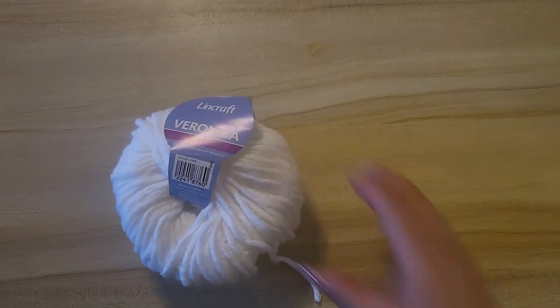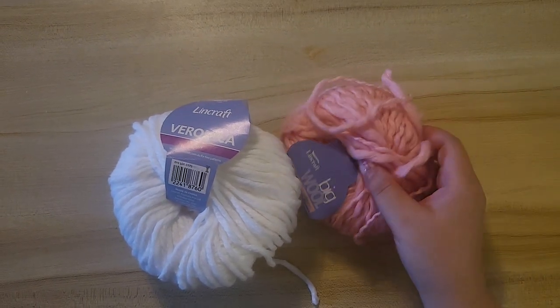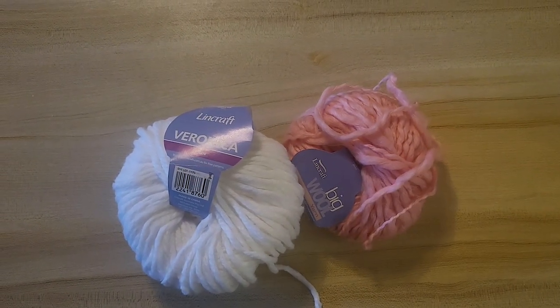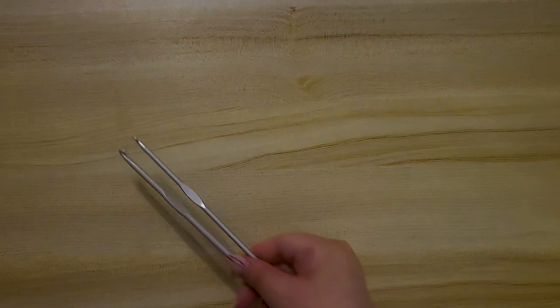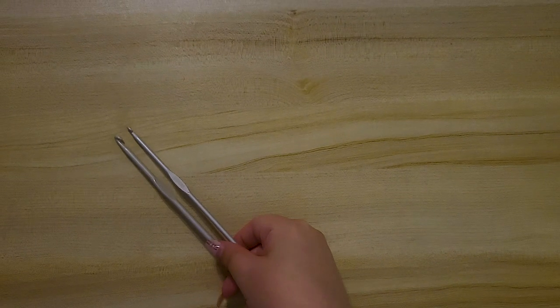First you will need two different color yarns. I chose white and pink for mine. You will also need a little bit of black yarn for the mouth later on. The recommended yarn tension was 7 millimeter and I used 5 millimeter hooks to make sure the stitches are nice and tight.